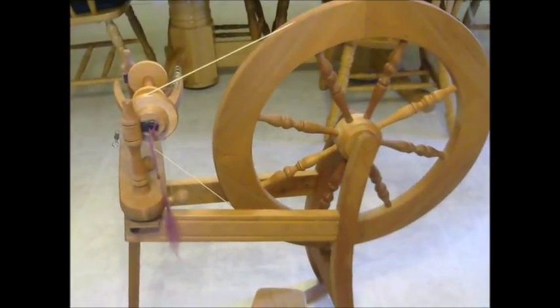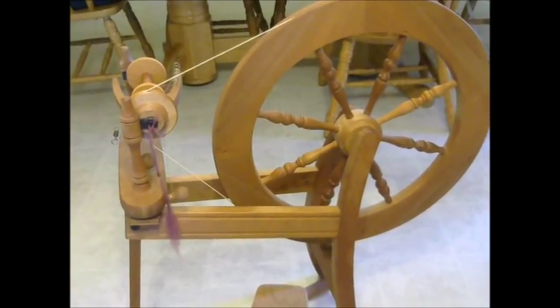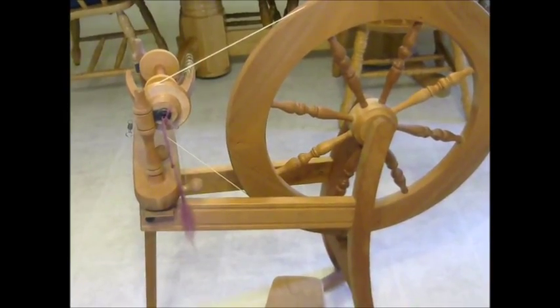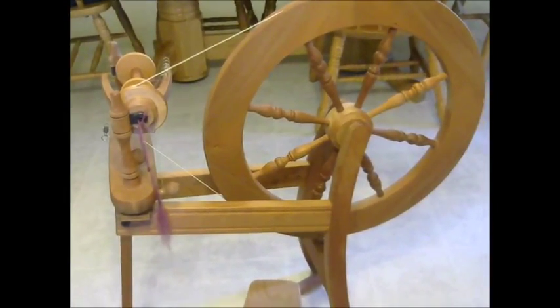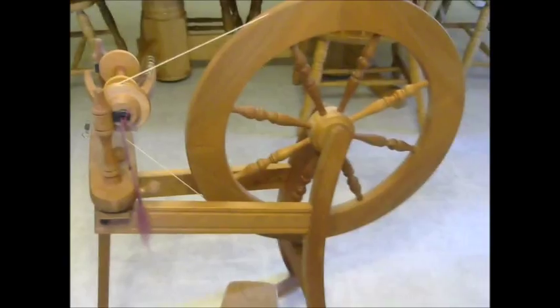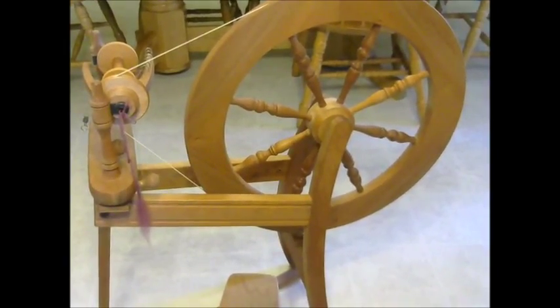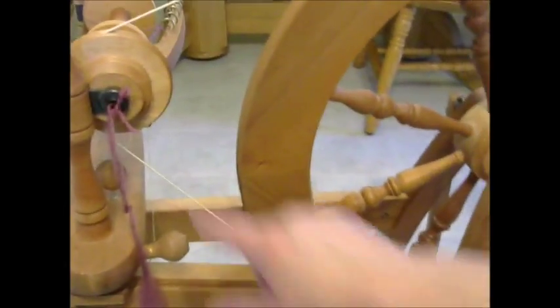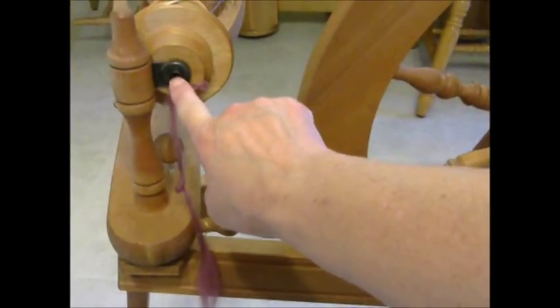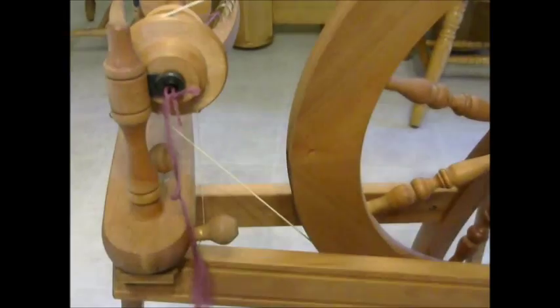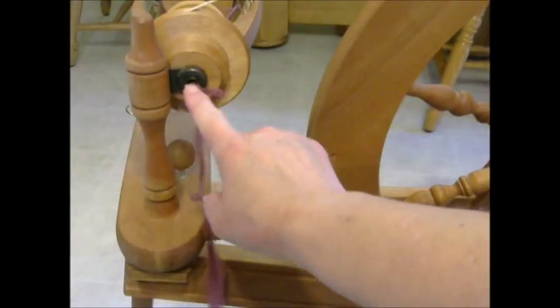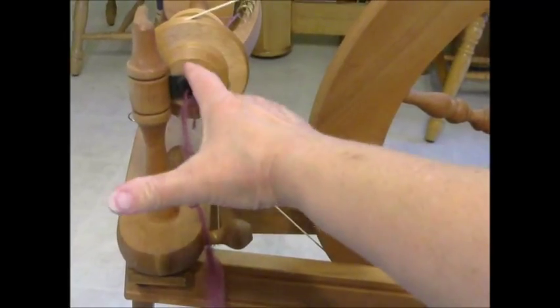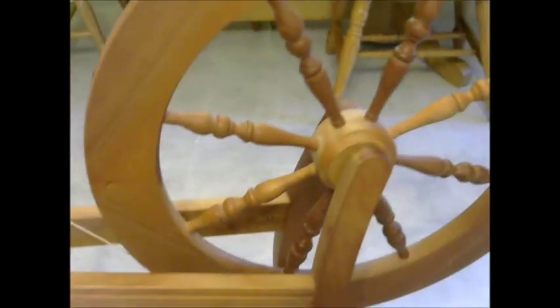The one that you think of with Sleeping Beauty, with the great big wheel with the nail on it that she pricks her finger on the spindle itself, that is a walking wheel or a wool wheel. And that pointy part that she poked herself on in the fairy tale is what we now have as an orifice, because a walking wheel does not have a bobbin on it. It has like a nail that comes out here and the yarn winds onto the nail that sits here.